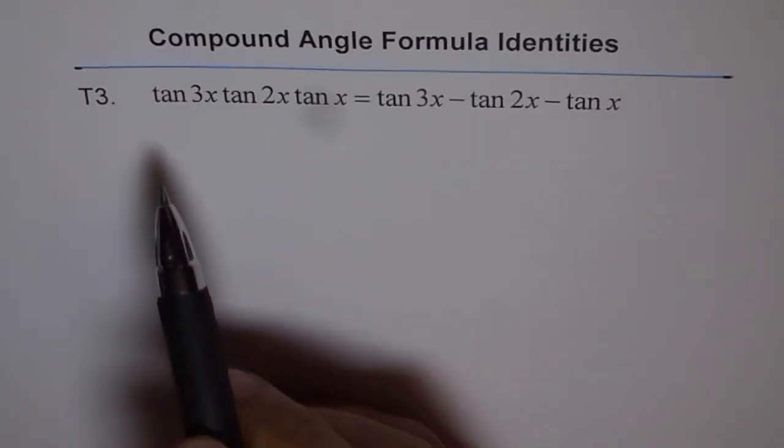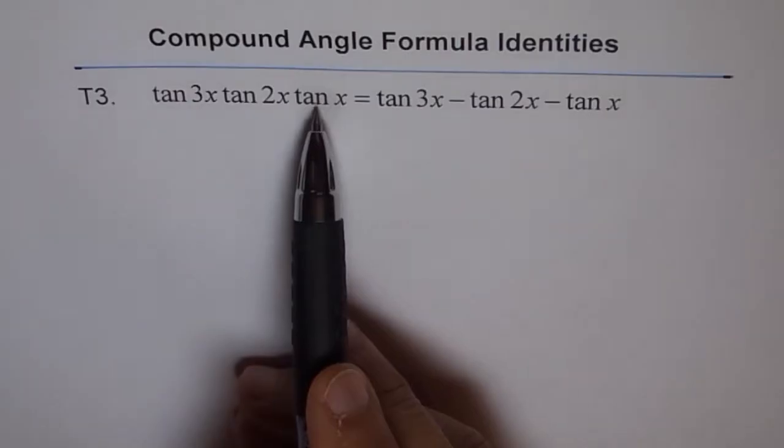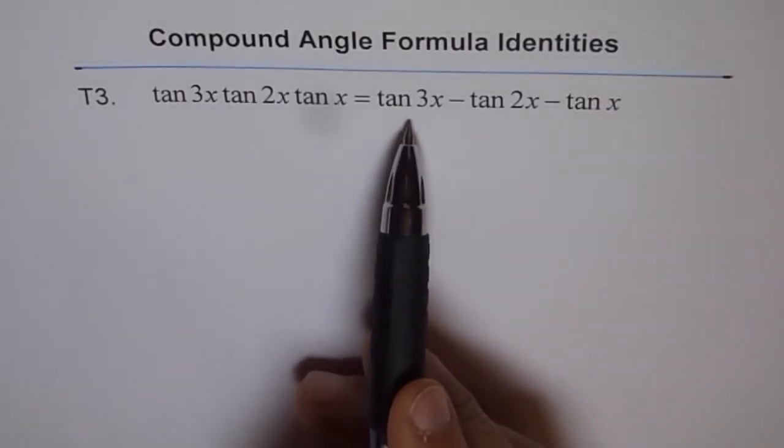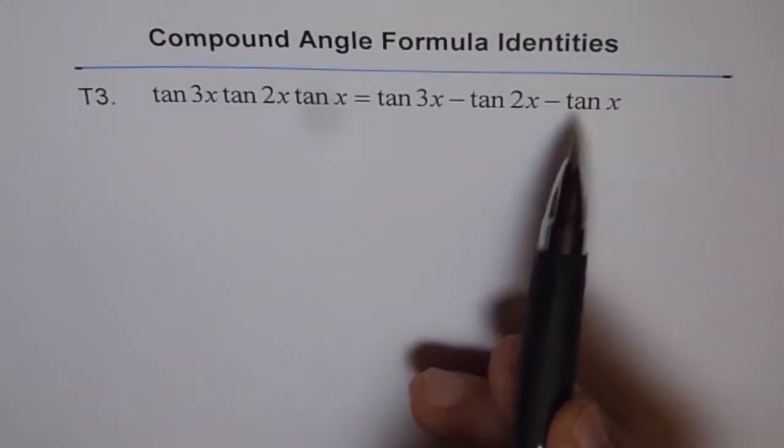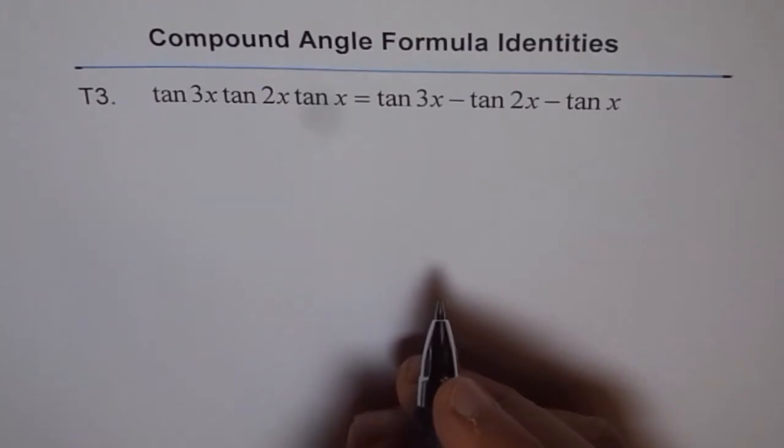So the question here is tan 3x tan 2x tan x equals to tan 3x minus tan 2x minus tan x. Very interesting conclusion. Well, let's try to do it.